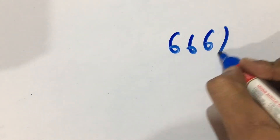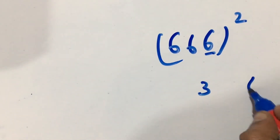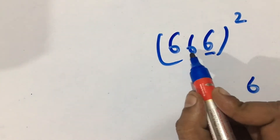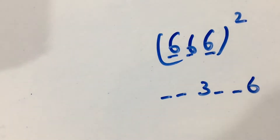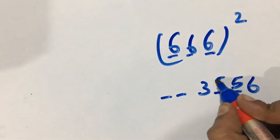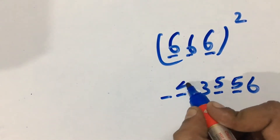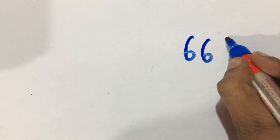Similarly for 36 — let's take 666 squared. We know 6 squared is 36. There are two 6s remaining, so count one, two, one, two. Six minus one is 5, six minus one is 5, three plus one is 4. The answer is 4 4 3 5 5 6.